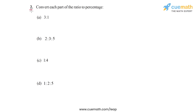In question 2 of this exercise, we have these four parts that you see here. In each part, a ratio is specified, and we have to convert each part of that ratio to a percentage. What this means is that we have to specify each part of the ratio as a percentage of the whole. So let's start with the first part, part A.